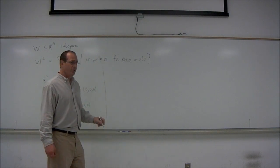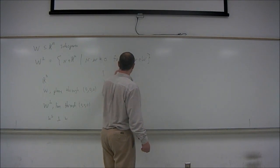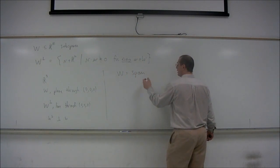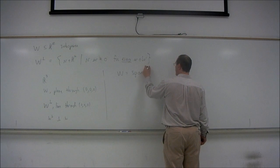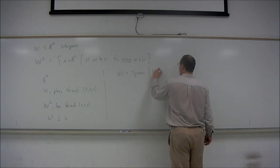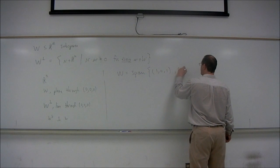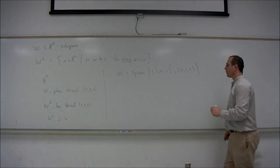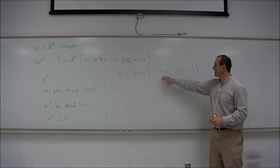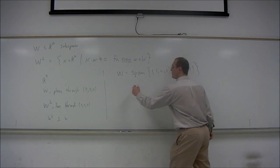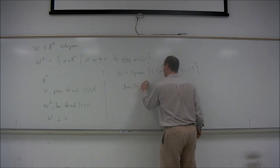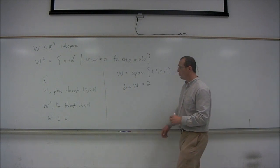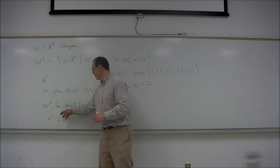Let's look at an example. Suppose W is the span of two particular vectors in R^3. Suppose W is the span of the vectors (1, 0, 1) and (0, 1, 1). These are two linearly independent vectors. The dimension of W is equal to 2, so this is a plane. We're expecting W perp to be a line.